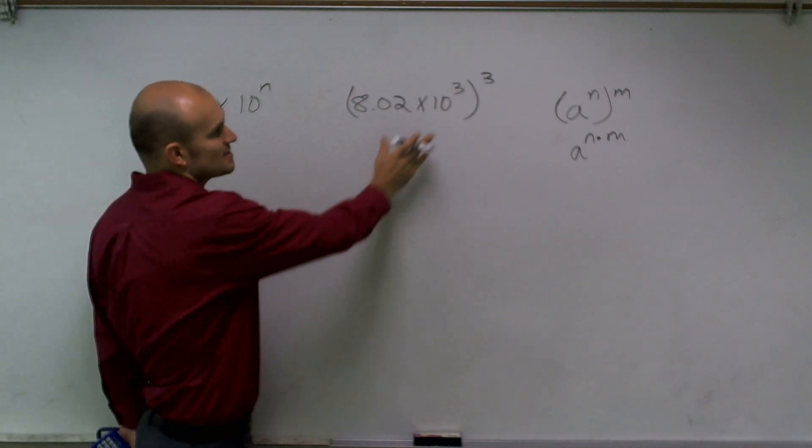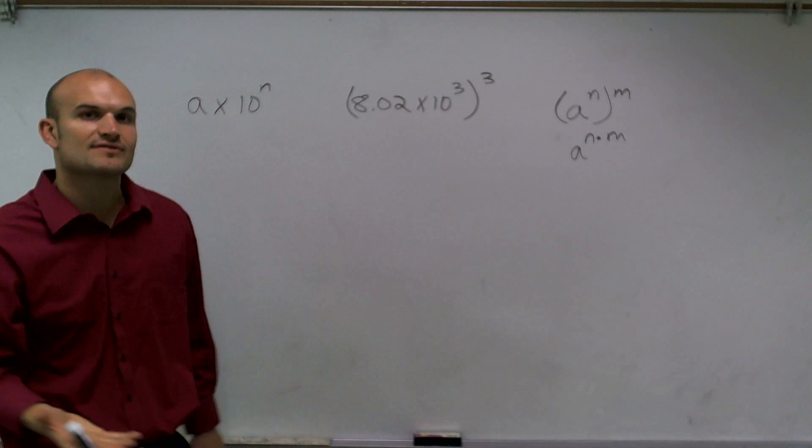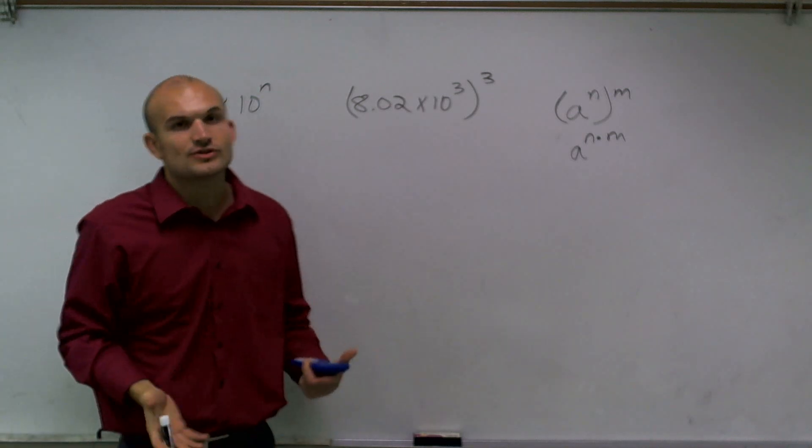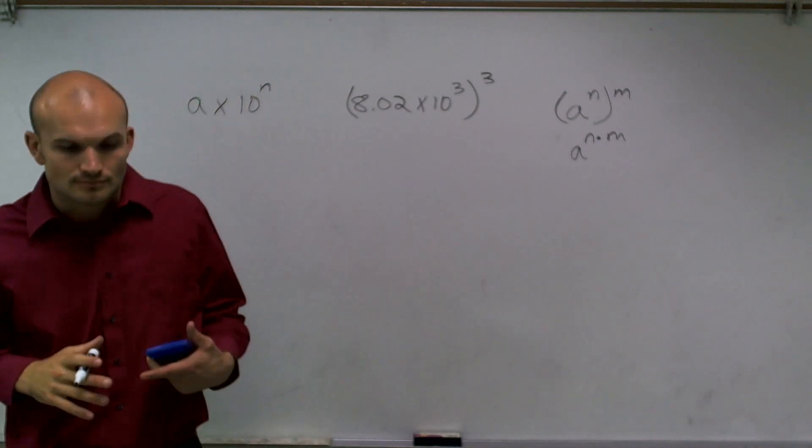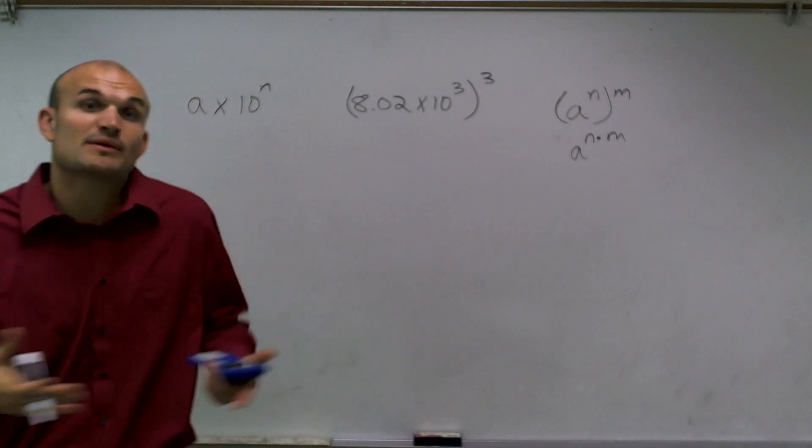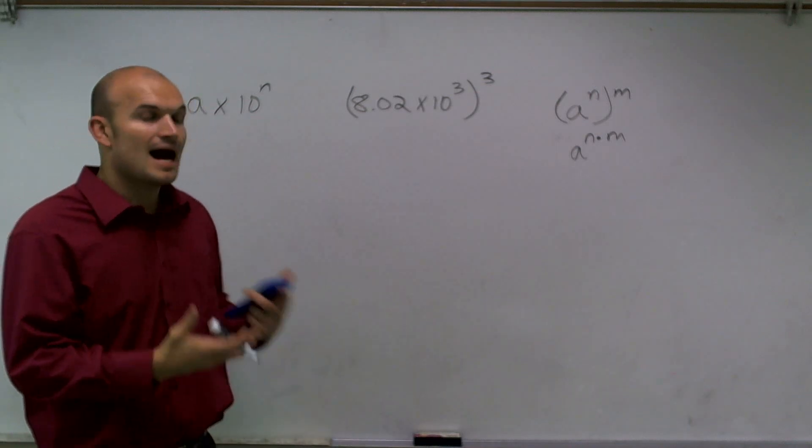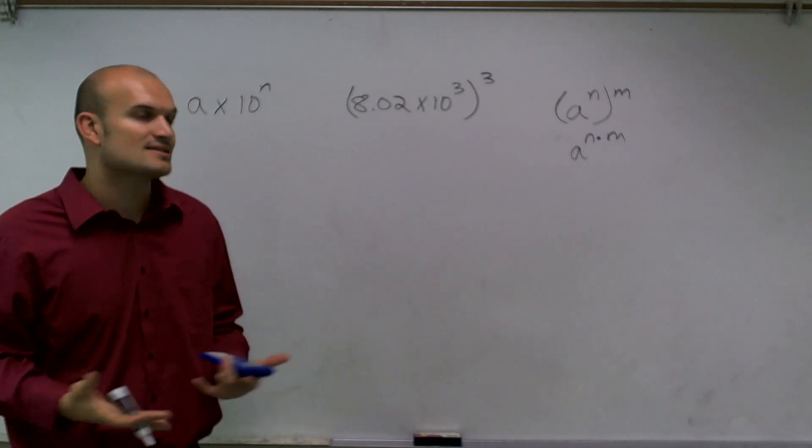One thing we've got to remember is this is a whole number in general. The reason why I use scientific notation again is just a way to rewrite numbers that are maybe very big or very small, but the operations with them are going to stay consistent as well.